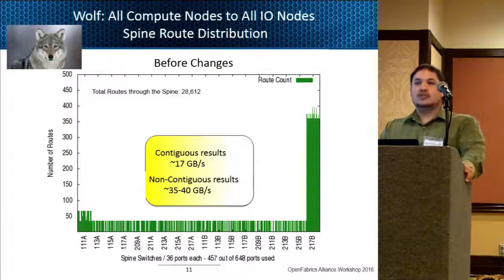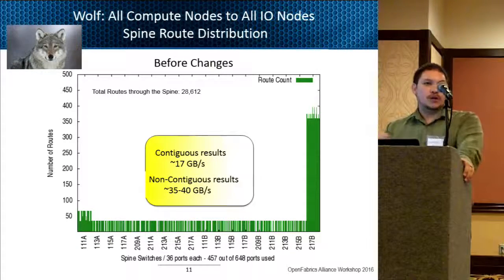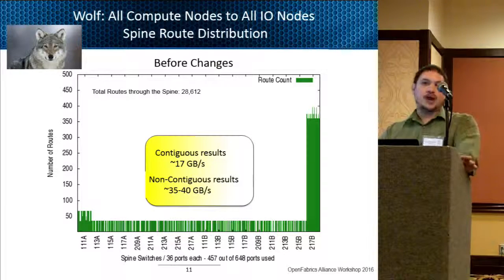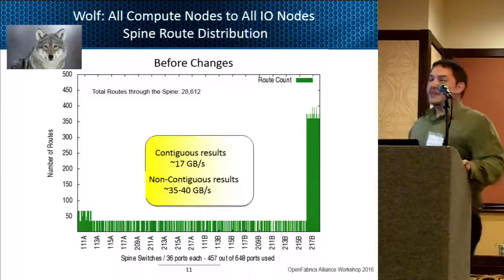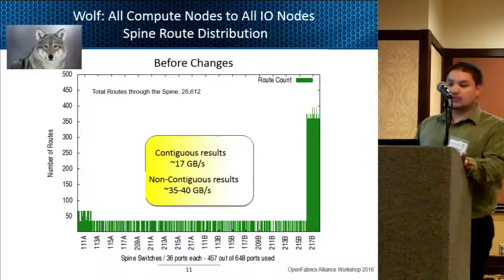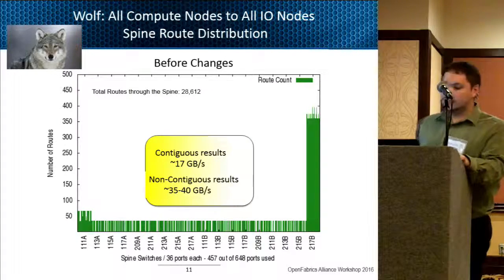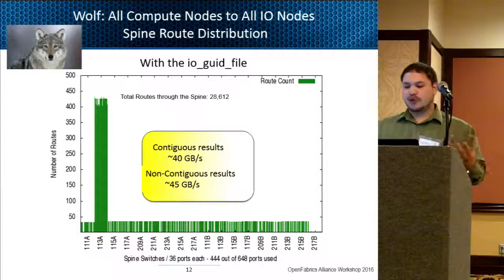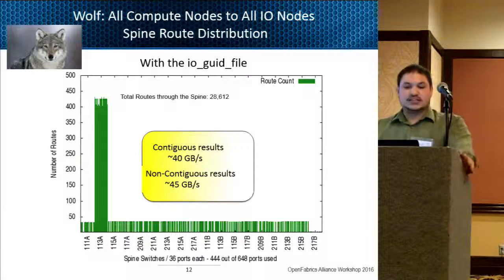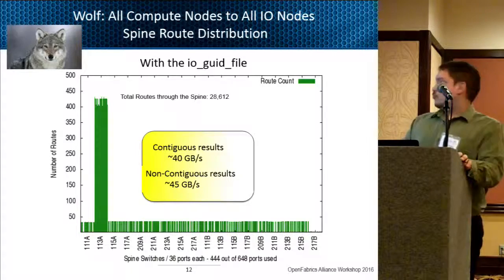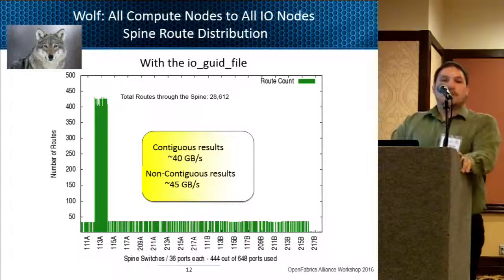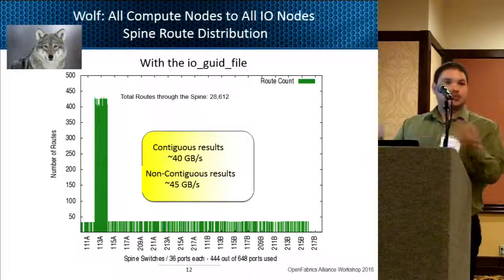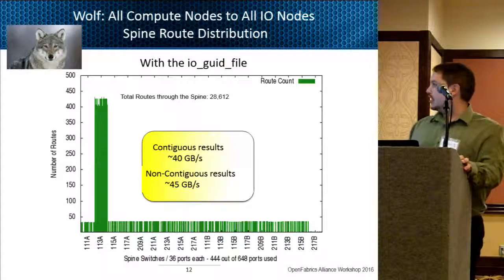We then decided to do some more testing on how routing was implemented and how we could influence it to change based on our routing needs, focusing on getting compute nodes to IO nodes to reach the file system. One of the first things we tested was the IO GUID file. Since we were running a fat tree algorithm on this fabric, we started implementing it to see if that could help balance out the routes. We did get a significant performance increase with the IO node GUID file, but the majority of routes were still only on one spine card — spread across multiple ports on that card but not the balance we wanted.